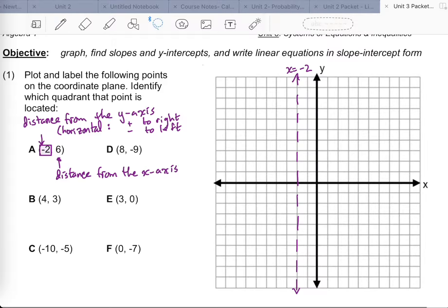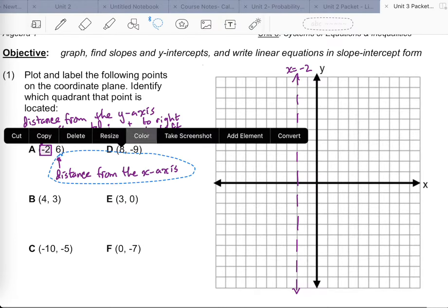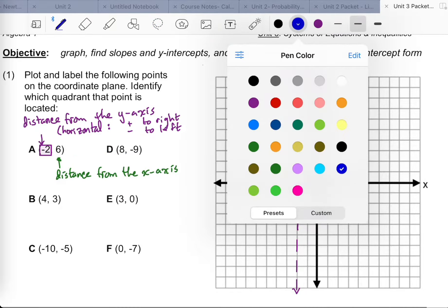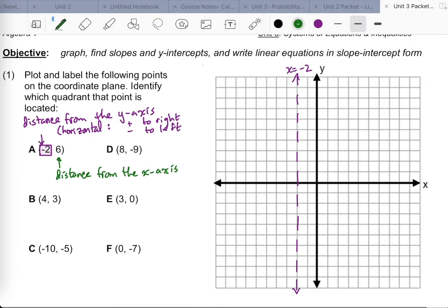Now the y-value gives us the distance, and it actually helps us triangulate the location of the coordinate. I'm just going to make this different in terms of color. The distance from the x-axis is a vertical distance. Positive means you're going up, negative means you're going down.